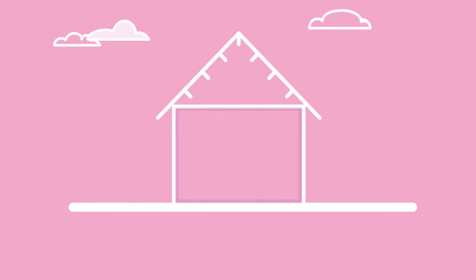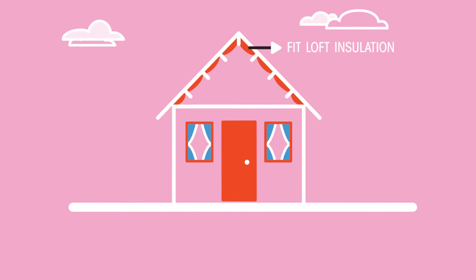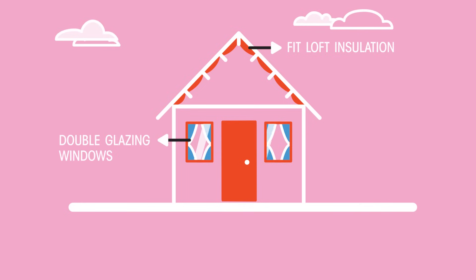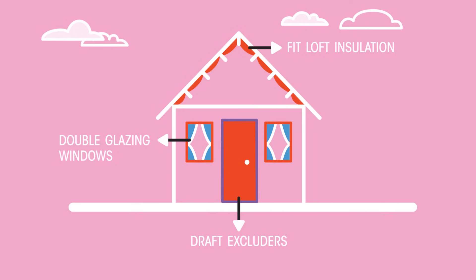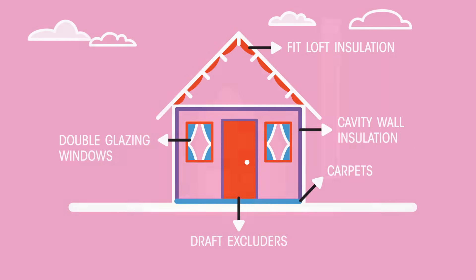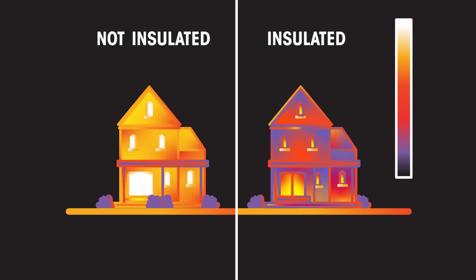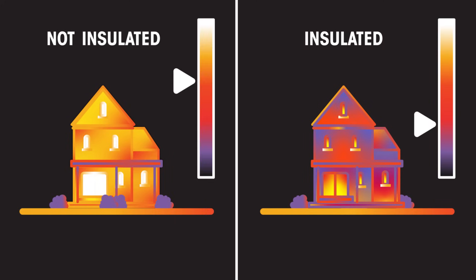The use of thermal insulation can also reduce the loss of heat. A house can be insulated in a variety of ways to reduce heat loss: insulation can be added to the attic or loft, double glazing can be used on the windows, draft excluders can be fitted to the doors, cavity wall insulation can be used, and carpets can be laid. This infrared image shows how heat is lost from a house — the brighter the image appears, the greater the heat loss. Look at the difference adding insulation makes.